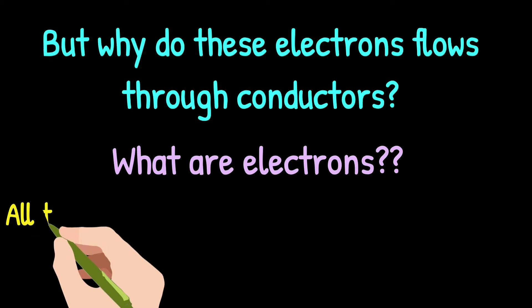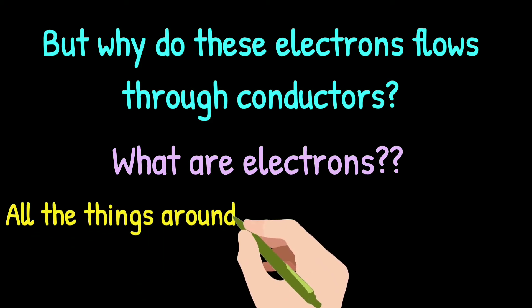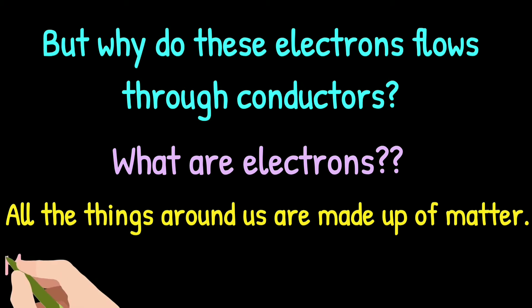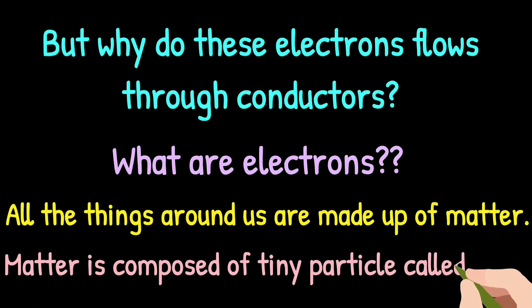All the things around Earth are made up of matter. Matter is composed of tiny particles called atoms. Let us try to understand what is an atom.